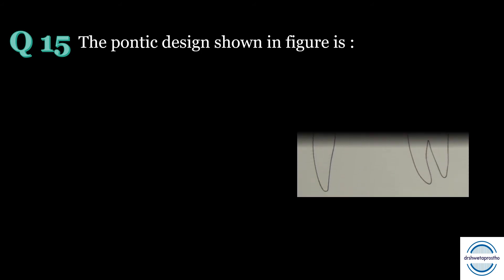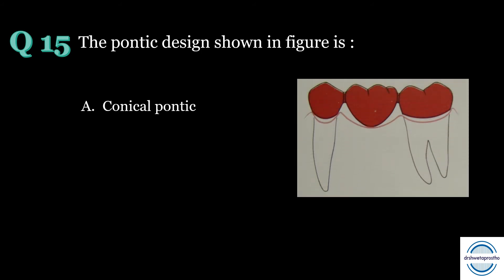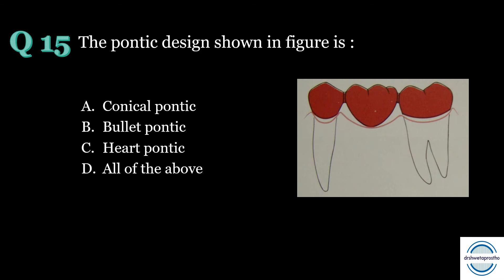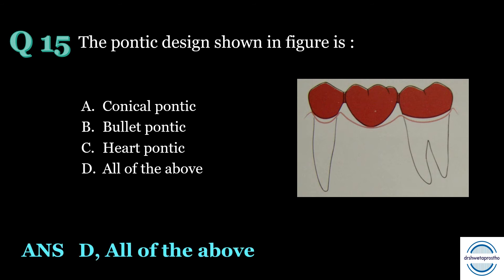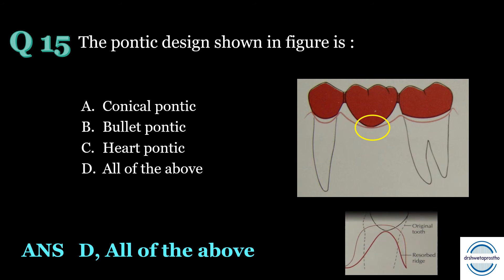Question number fifteen: The pontic design shown in the figure is — A) conical pontic, B) bullet pontic, C) heart pontic, or D) all of the above? The answer is D — all of the above. The conical pontic is also called the egg-shaped pontic, bullet pontic, or heart pontic. It is made convex with only one point of contact at the center of the ridge. It is mainly used in mandibular posterior teeth where aesthetics are less important, and is unsuitable for broad residual ridges.